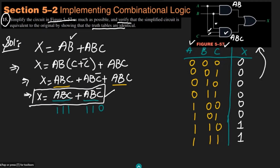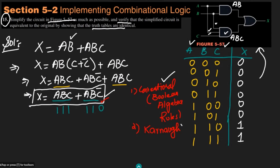Now I can simplify this expression using two methods. The first is the conventional method based on Boolean algebra rules. The second is the Karnaugh map method. Here I am going to use the first method — Boolean algebra.